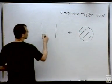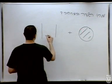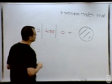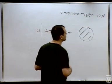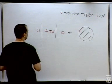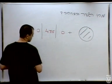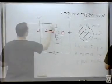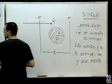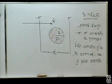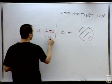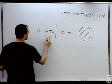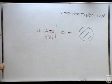ואנחנו כבר יודעים שבקבל לוחות השדה הוא 4 פי סיגמה בפנים ו-0 בחוץ. ועם הסימנים שבחרנו, השדה יהיה מכוון שמאלה בתוך הקבל. נגדיר ציר x שהולך ימינה, ואז השדה בין הלוחות הוא 4 פי סיגמה בכיוון מינוס x, ומחוץ ללוחות הוא 0. (We already know that in the parallel-plate capacitor the field is 4πσ inside and 0 outside. With the signs we chose, the field points left inside the capacitor. Define x-axis pointing right: field = -4πσ x-hat inside, 0 outside.)